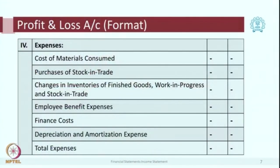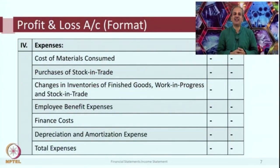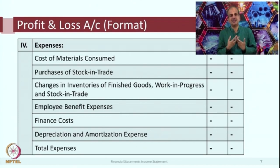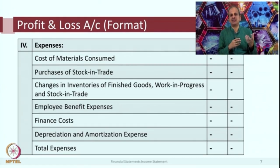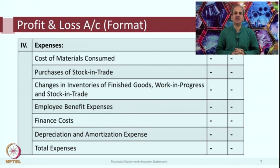Both together form the total revenue for the entity. Item number 4 is expenses. All expenses of the concern in that particular year are listed out. The Companies Act has specified certain headings, just like in the balance sheet, and all expenses must fit under those headings. The first item is cost of material consumed. For a manufacturing entity, you purchase raw material, components, and spare parts — the cost of all these is material consumed. What is actually consumed in the period is shown here, not what is in stock. Next is purchase of stock in trade.